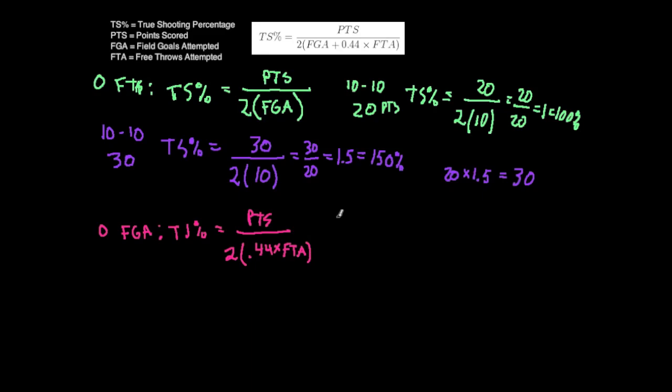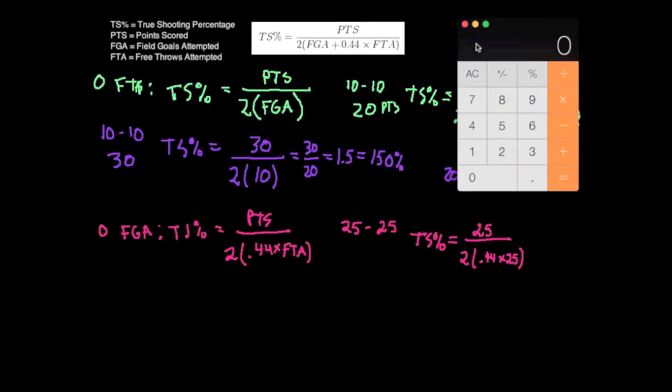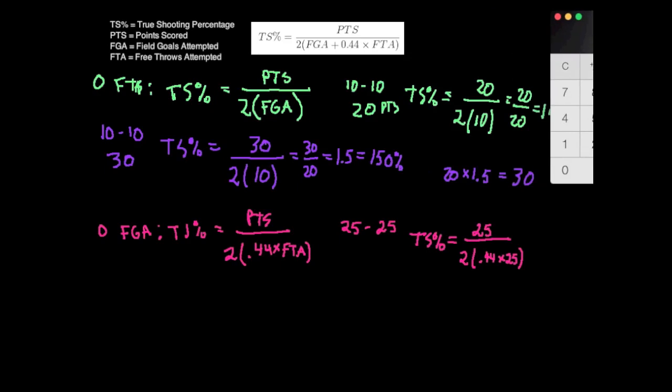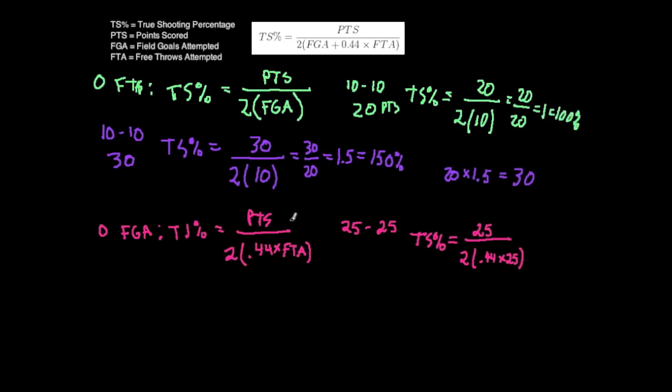Let's say DeAndre Jordan has been working on his free throws since he's such a poor foul shooter. He makes 25 out of 25 free throws in a game, giving him 25 points. His true shooting percent would be 25 over 2 times 0.44 times 25. Solving the denominator: 2 times 0.44 times 25 equals 22.